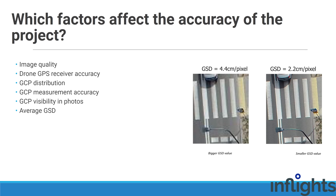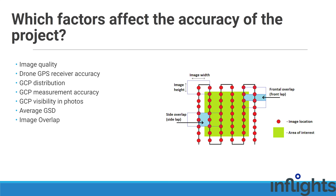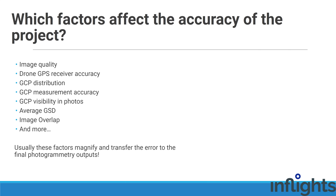Average GSD and image overlap also affect accuracy: the smaller the GSD value, the better accuracy can be achieved; the bigger the overlap value, the better. You will have to balance all these factors to achieve good accuracy and optimize time spent on the drone flight and processing.